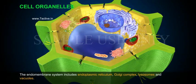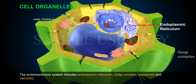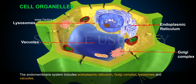The endomembrane system includes endoplasmic reticulum, Golgi complex, lysosomes and vacuoles.